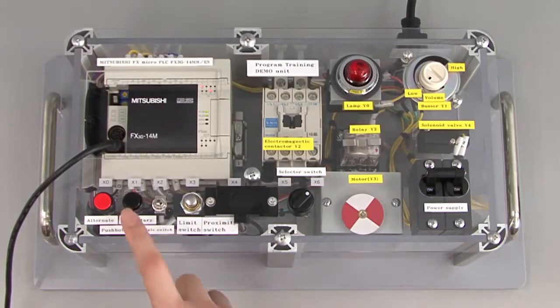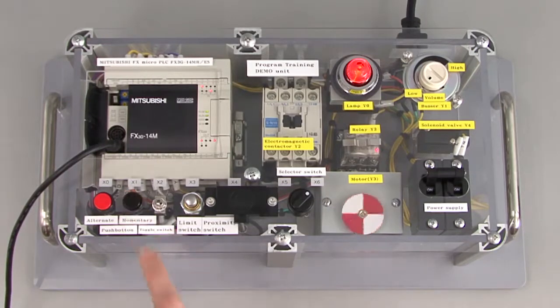Now let's check the operation. x1 was assigned as the entrance sensor. So press x1, and the red lamp will turn on, and the motor will start.